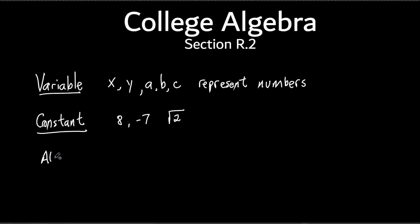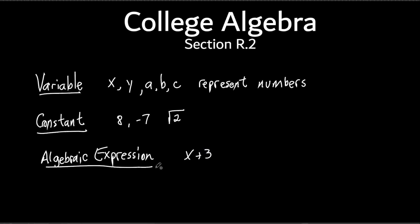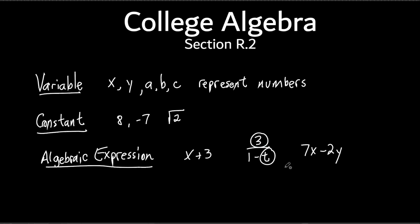What about this? It's called an algebraic expression. Basically it's a combination of variables and constants — there's probably a more formal definition, but I'll just say it's a combination of variables and constants. For instance, a super easy one: X plus 3. That's an algebraic expression, because it's a variable and a constant added together. You could have, like, 1 over 1 minus t — so you can have division, multiplication, addition, subtraction. That would be an algebraic expression.